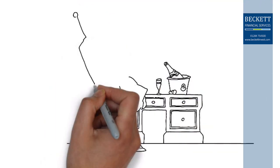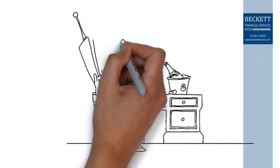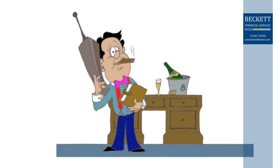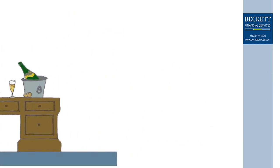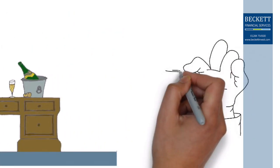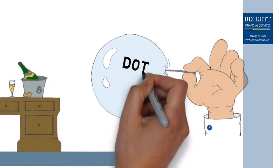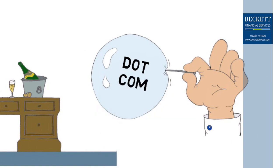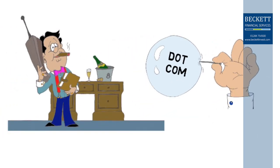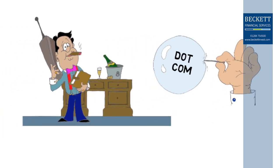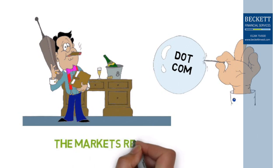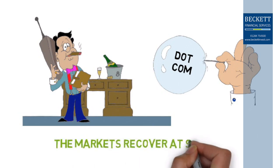Notable events in recent times include Black Monday in 1987 and the bursting of the dot-com bubble in March 2000. There have been many other events over the years and no two stock market falls are the same, but they do have one thing in common: the markets recover at some stage.